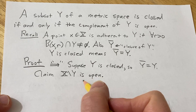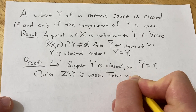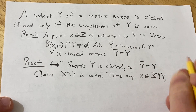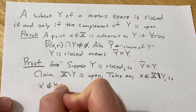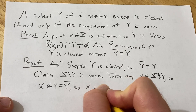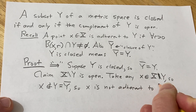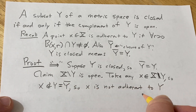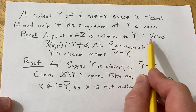To show this set is open, we have to show that every point is an interior point. Take any X in this set. That means X is not in Y, which equals Y-bar. So X is not adherent to Y, because it's not in the closure, and the closure is the set of all points adherent to Y. So we negate this definition.